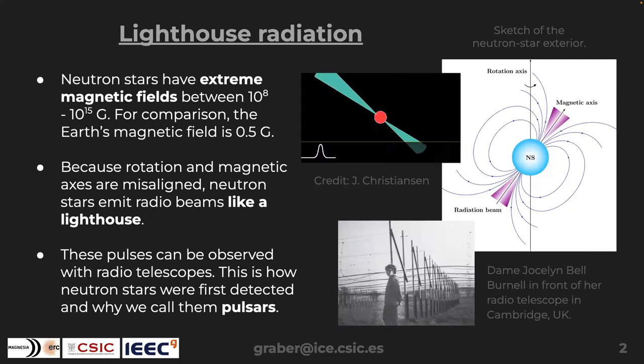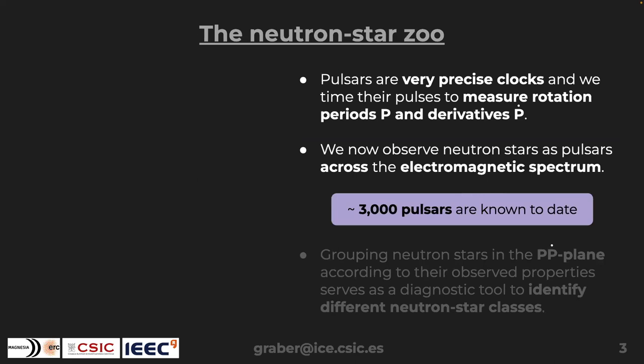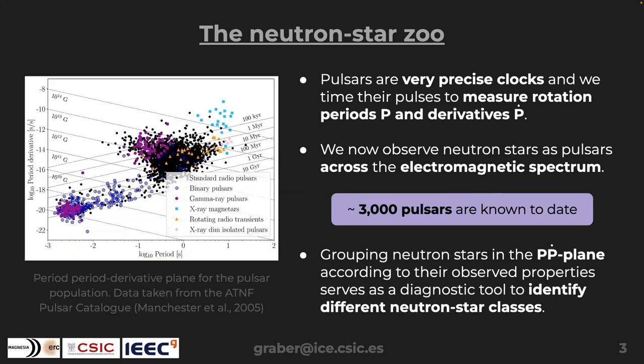This is how Jocelyn Bell Burnell detected pulsars for the first time during her PhD. We can very precisely measure these clock-like radio pulses — a process called timing — and for many of them we know the period and the period derivative. At the moment we know around 3,000 pulsars across the full electromagnetic spectrum: radio, gamma, and X-rays. We like to plot them on the P-Pdot diagram, with period derivative on the y-axis and period on the x-axis.